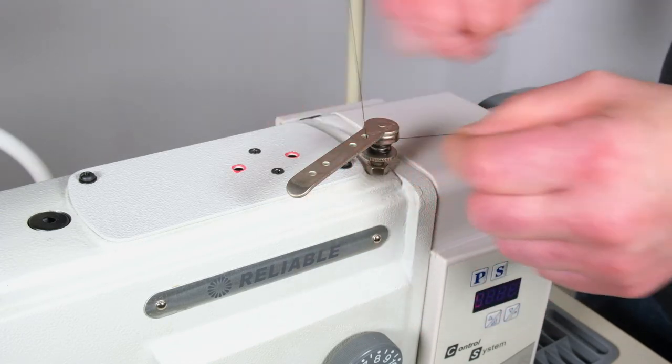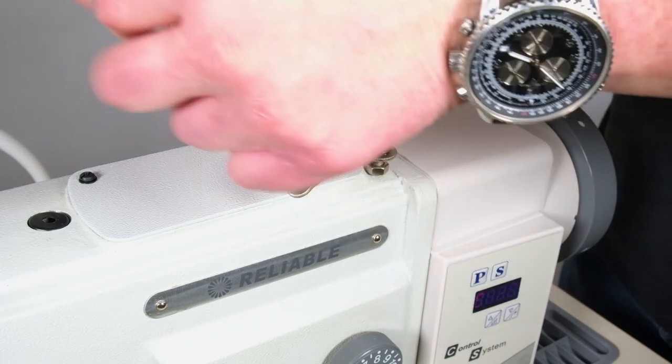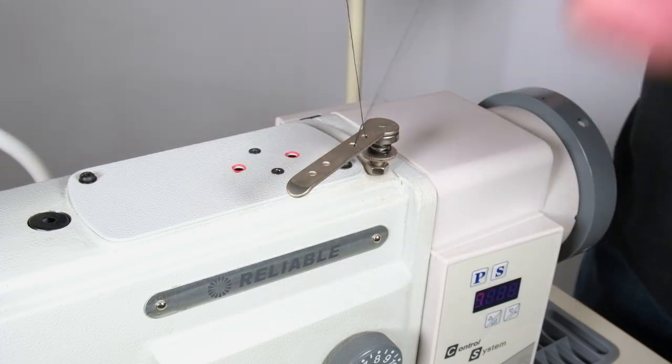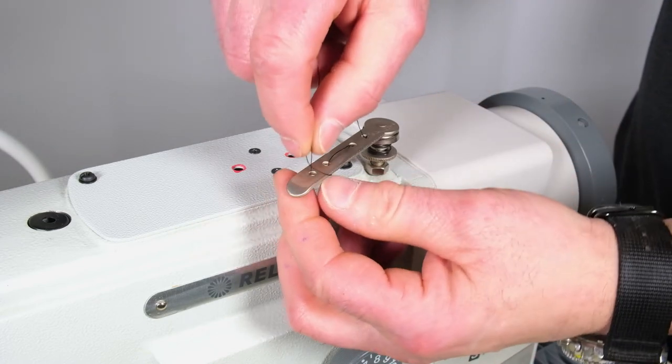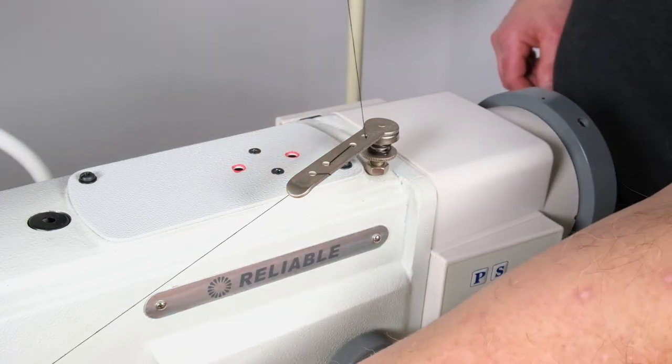Down through the first eyelet, in between the fixed bar and the tension disc, up through the second eyelet, down through the third eyelet, around and through the fourth and now down to your bobbin winder.